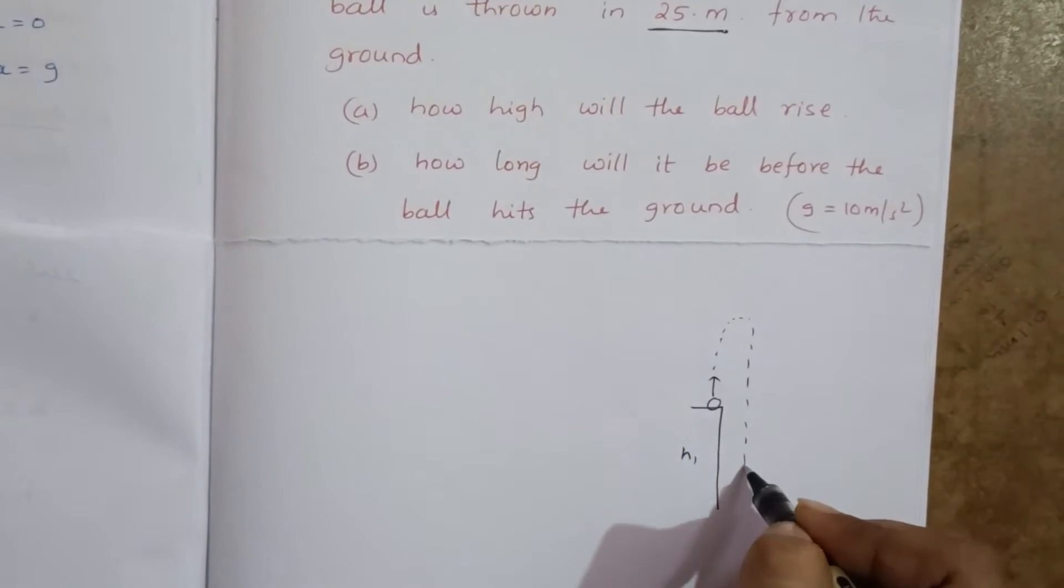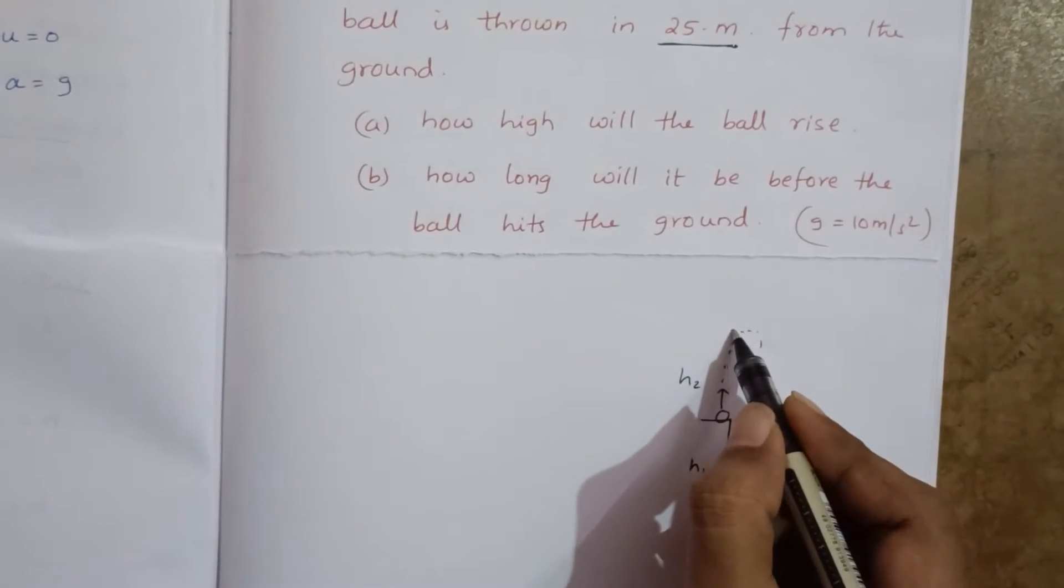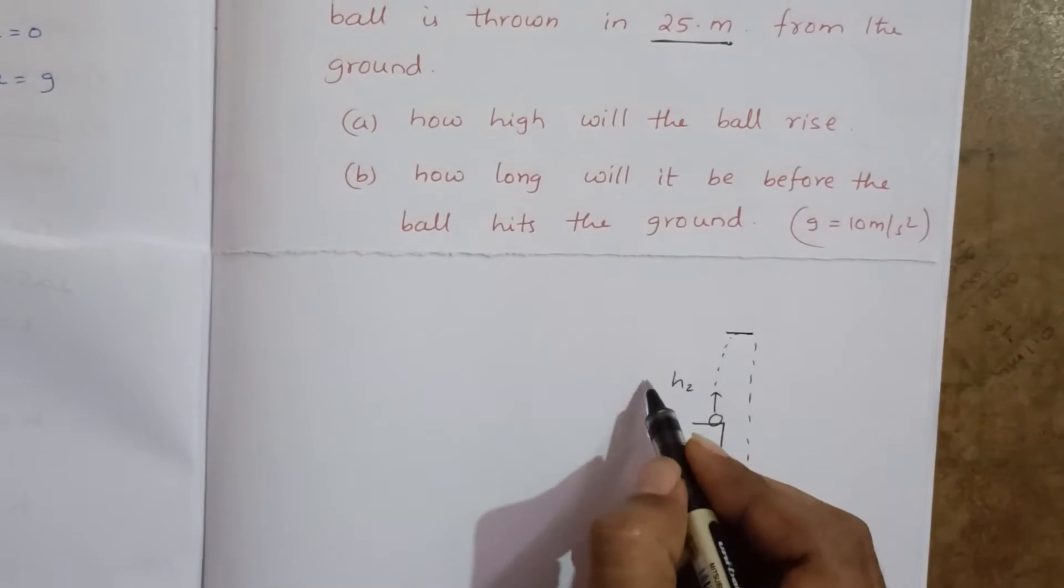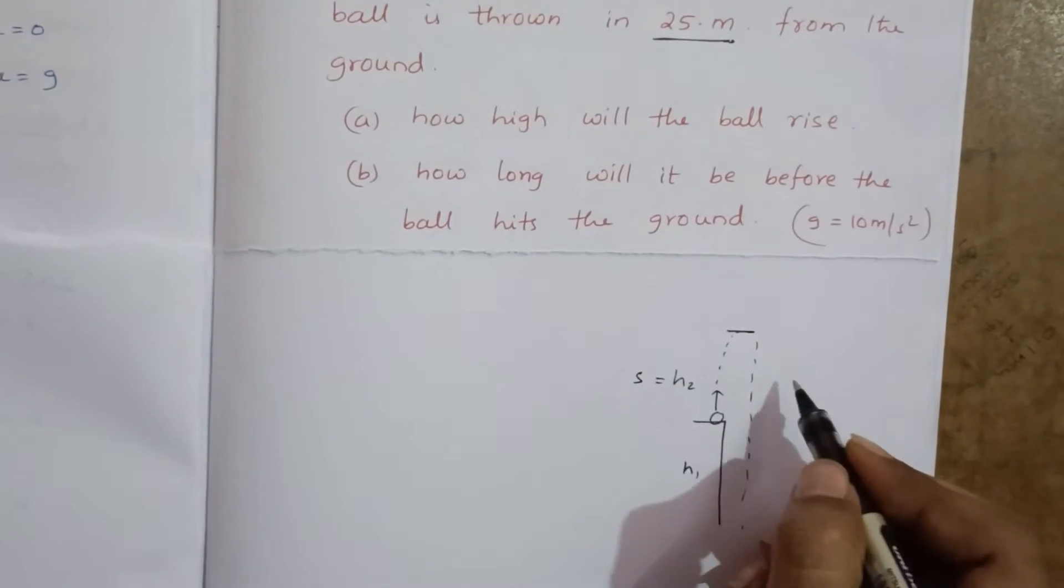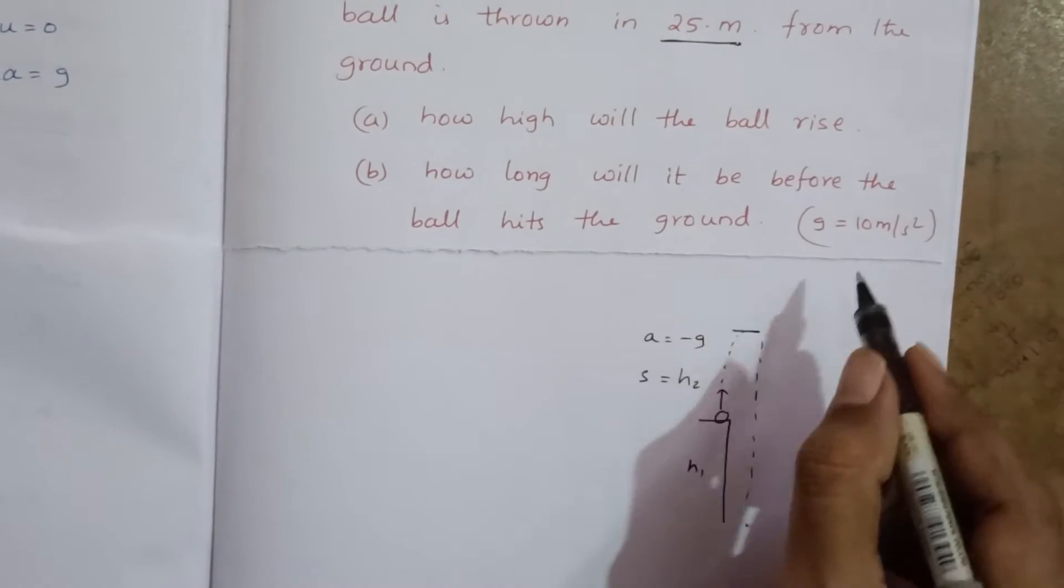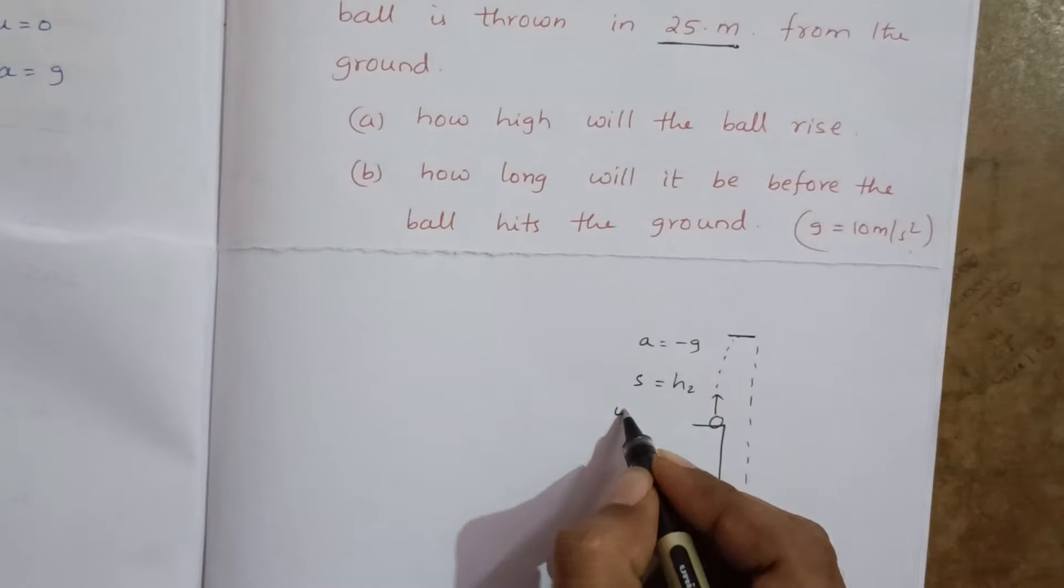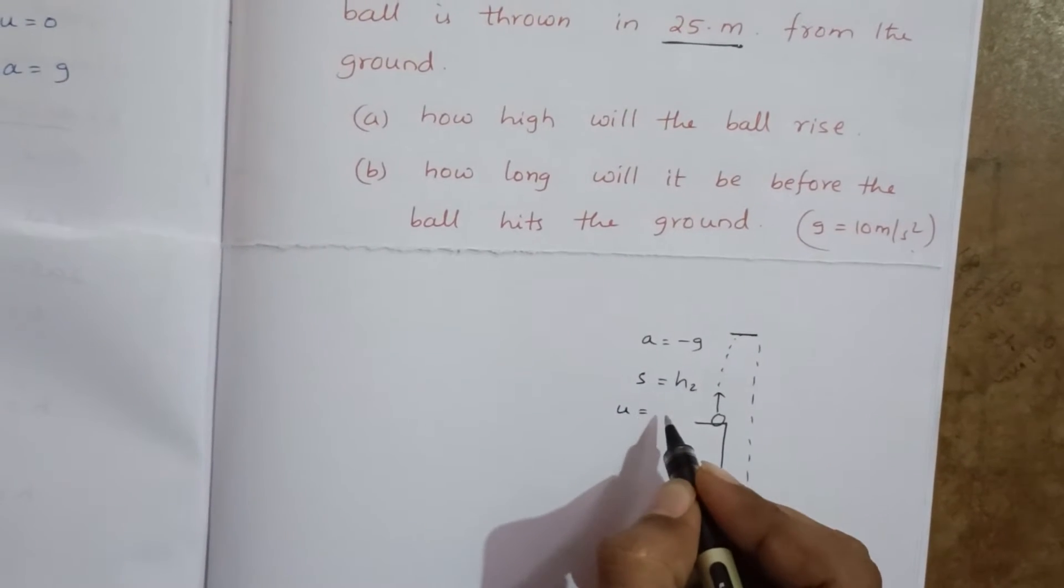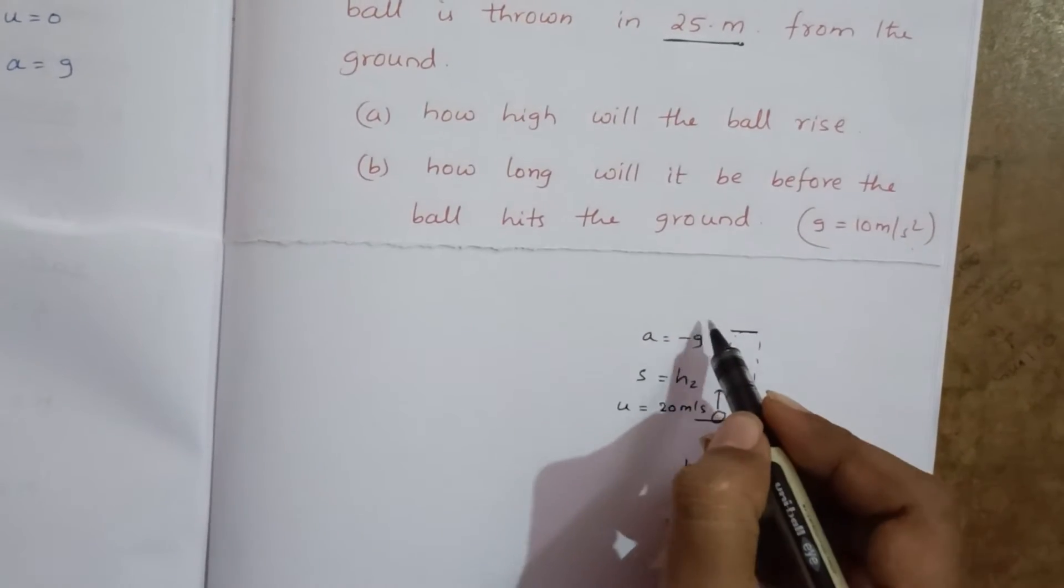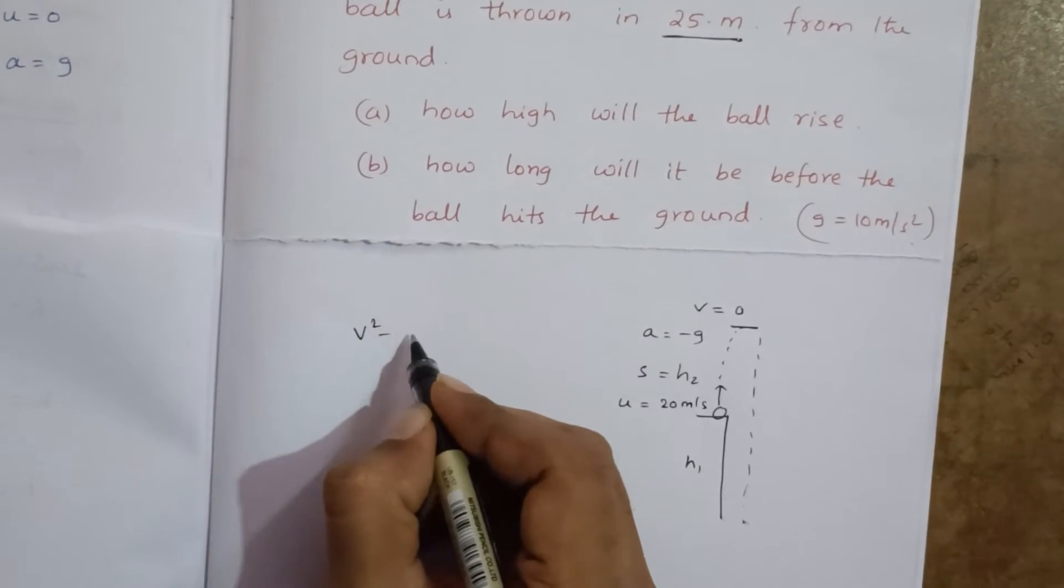This height he is asking, how high will the ball rise? This height we should calculate, h₂. So displacement is h₂, and as it is going up, acceleration is minus g, and g value they given 10 meters per second squared. At maximum height velocity becomes zero. Initial velocity, he given u equal to 20 meters per second. At maximum height velocity becomes zero. So we have a formula v² minus u² equal to 2as.